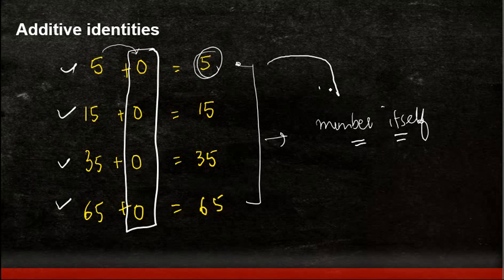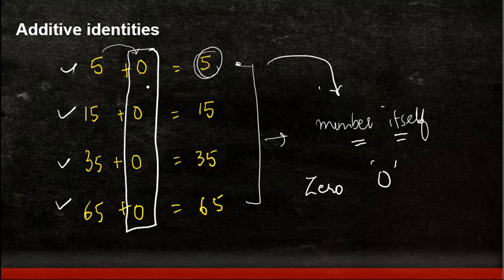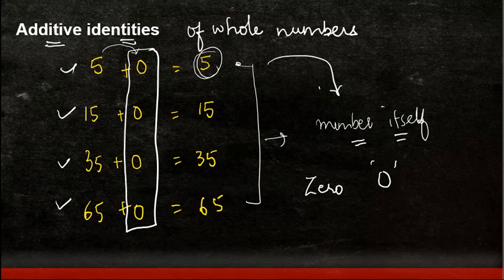And therefore 0 is also known as the additive identity of whole numbers.